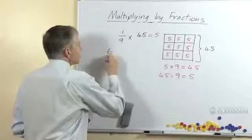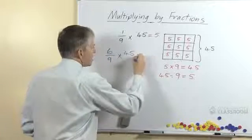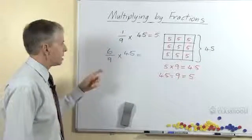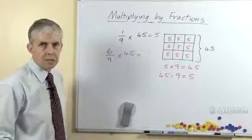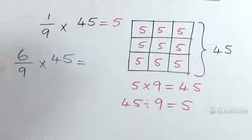Suppose the next question was 6/9 times 45. We have the same whole number, 45, the same denominator but a different numerator. This is now a 2-step question, but provided you know the answer to the first one, this isn't going to be that hard.